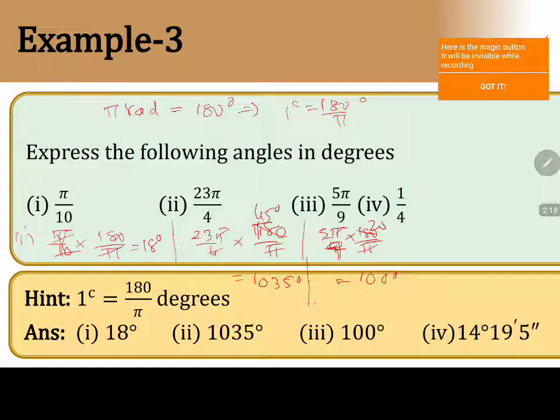Let me take up the last one. 1 by 4 multiplied by 180 by pi. This goes 45. You take up 45 multiplied by pi, you write it as 22 by 7. This will give us the value 14 degrees 14.3182.